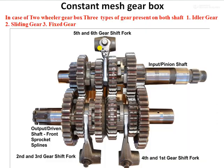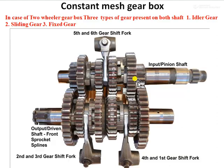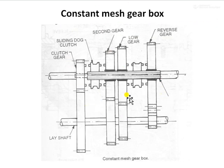This is the two-wheeler gearbox of constant mesh type. If asked about the two-wheeler gearbox, you can draw this image to explain the basic principle. The exact logic of gear selection varies company to company — some use three forks for a six-speed gearbox, others use two forks for a five-speed gearbox. The construction complexity differs, but this diagram represents the basic principle of the constant mesh gearbox used in geared two-wheelers. Thank you.